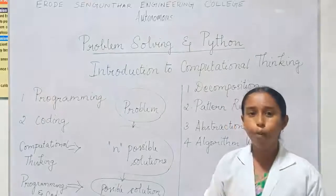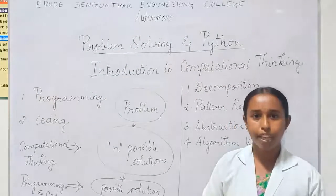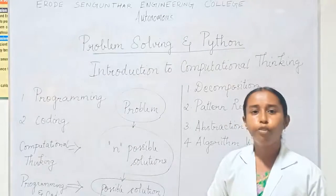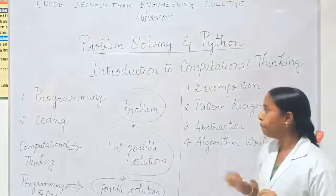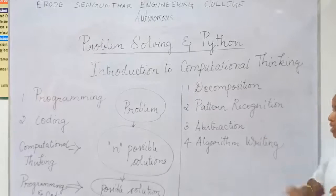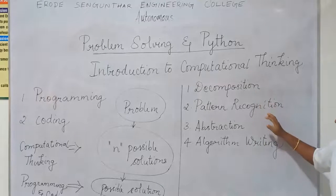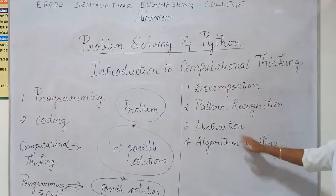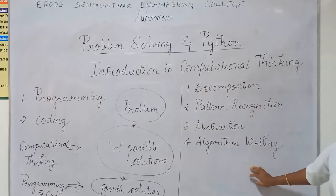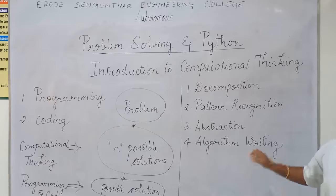We can solve a problem in computational thinking using four vital parts: decomposition, pattern recognition, abstraction, and algorithm writing.